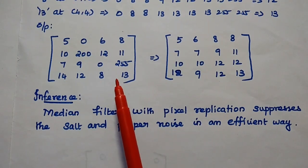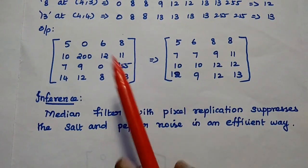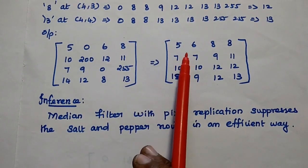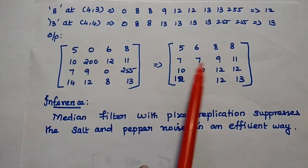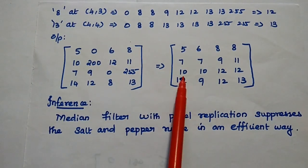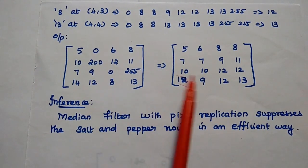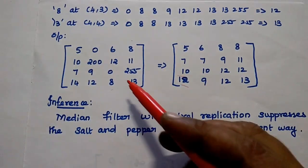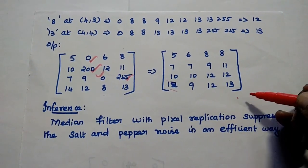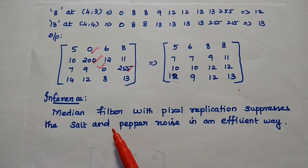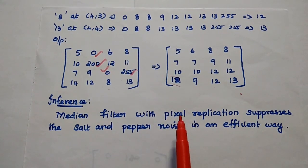Finally we can write the output as the median filtered response of the given image segment using pixel replication: 5→5, 0→6, 6→8, 8→8, 10→7, 200→7, 12→9, 11→11, 7→10, 9→10, 0→12, 255→12, 14→12, 12→9, 8→12, 13→13. You can see that this pepper noise as well as salt noise are all cleared using this median filter concept. The inference is that median filter with pixel replication suppresses the salt and pepper noise in an efficient way.